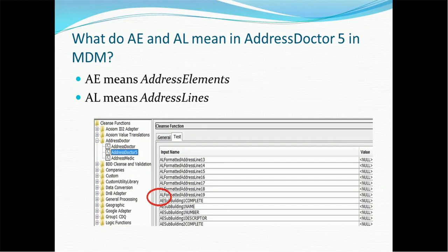If you are using Address Doctor 5, you will see two interesting elements: AE and AL. In Address Doctor 5, AE means 'address elements' and AL means 'address line.' For example, you can see AL formatted address line 1, 2, or 3; similarly you will see AE address line one or AE sub-building one name. These are the elements of the lines specific to Address Doctor 5.